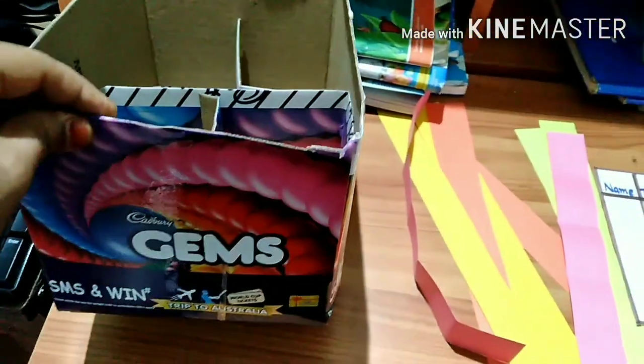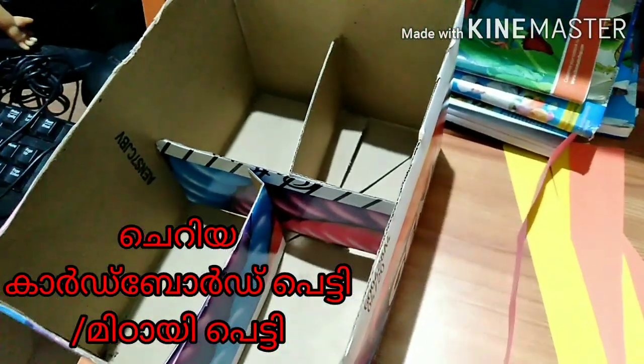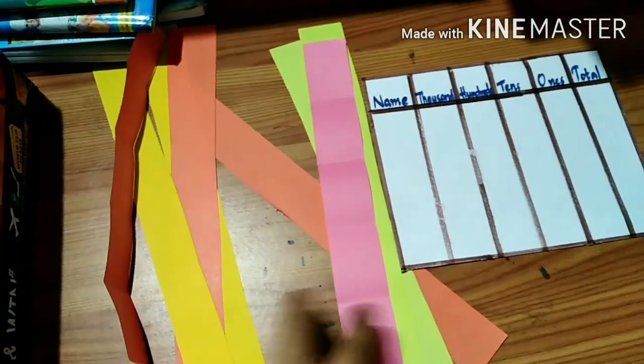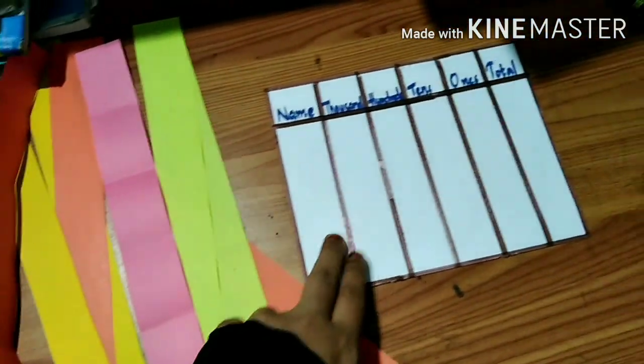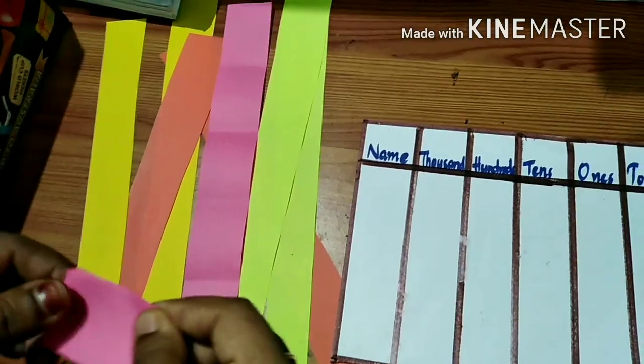Hello my dear students, today we can play a number game. For that we need a small chocolate box or small cardboard box, four colored paper strips, and one paper written with columns for name, thousands, hundreds, tens, ones, and total.